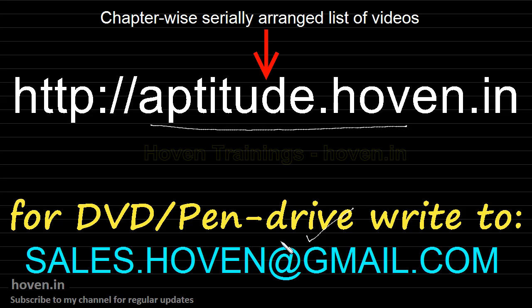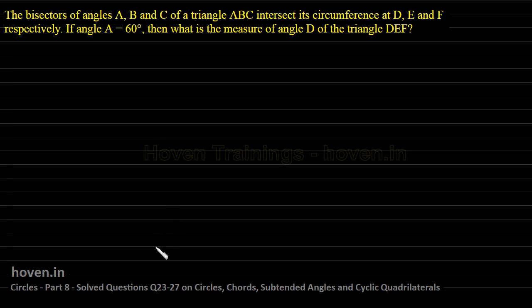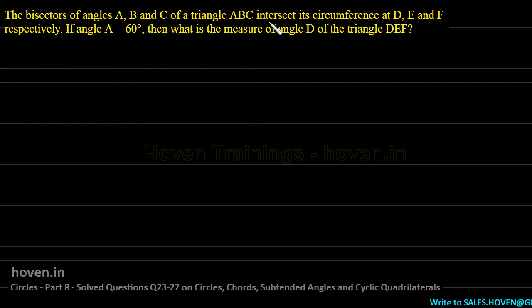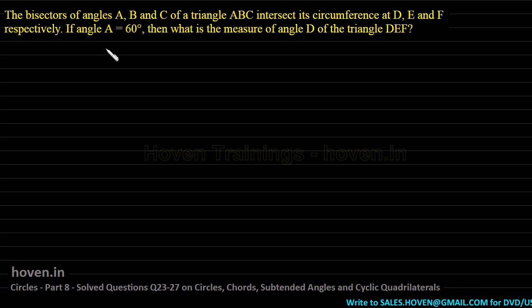Thank you for your support once again. The bisectors of angles A, B and C of a triangle ABC intersect its circumcircle at D, E and F respectively.